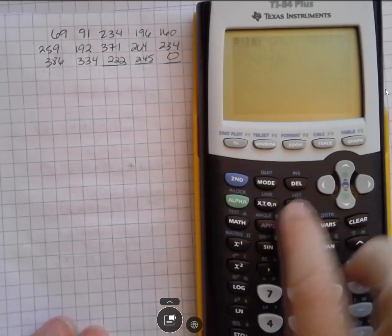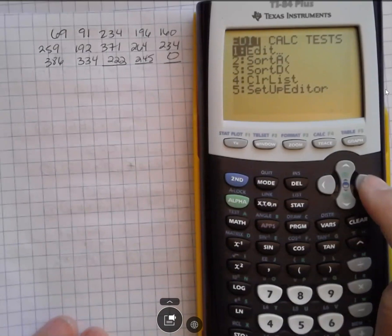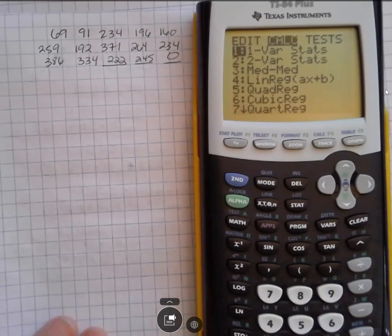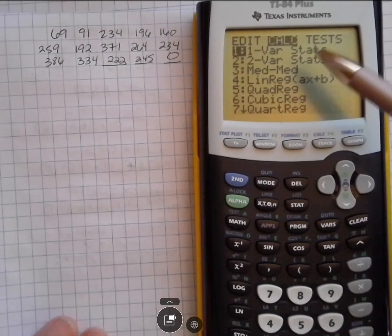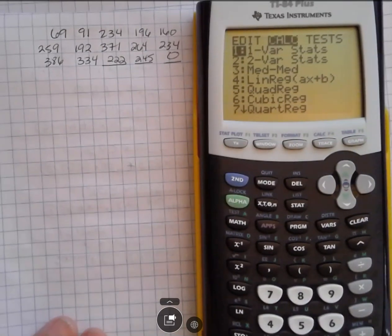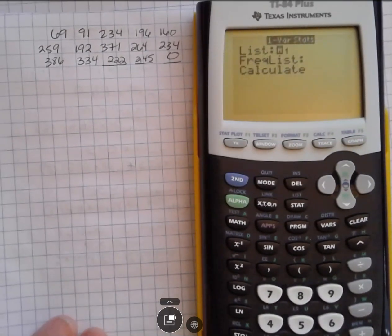And now I'm going to hit STAT again. And when I hit STAT this time, I'm going to use my right arrow to go over to CALC, which is calculate. I'm going to calculate something. And we're going to do one variable stats. And one variable stats is the first choice. So you can just go ahead and hit enter. You could also hit one. Either way, it's going to get you to here.